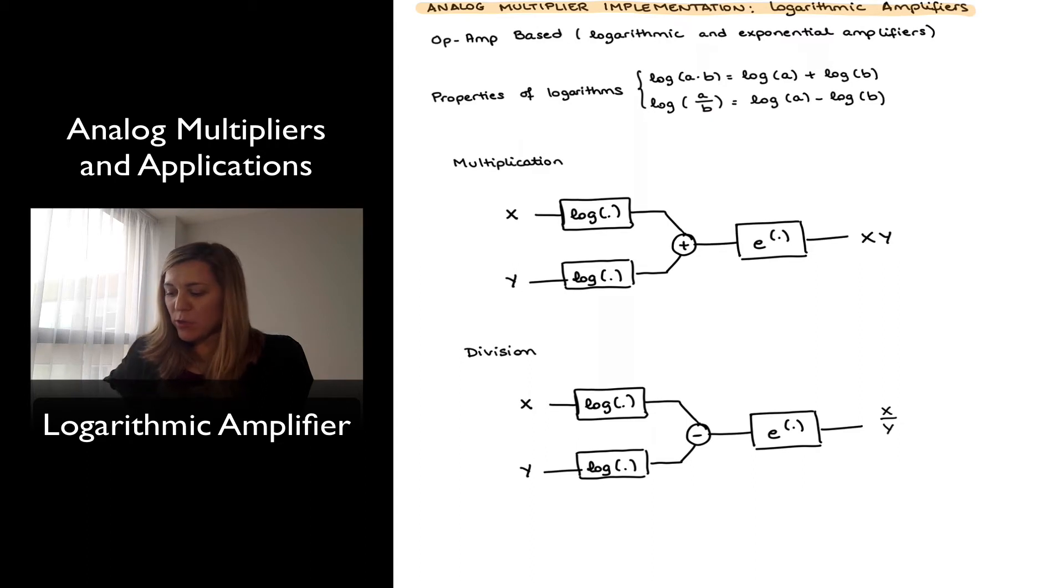Basically, we are using logarithmic and exponential amplifiers. The idea is that we use the properties of logarithms, and specifically, we're going to be using the fact that the logarithm of a product is equal to the sum of the logarithms, so log of a times b equals log of a plus log of b, and the logarithm of a ratio is equal to the difference of the logarithms of the individual signals, so log of a over b equals log of a minus log of b.